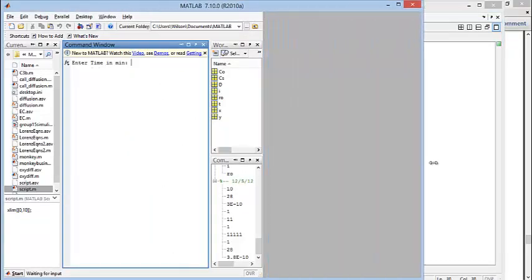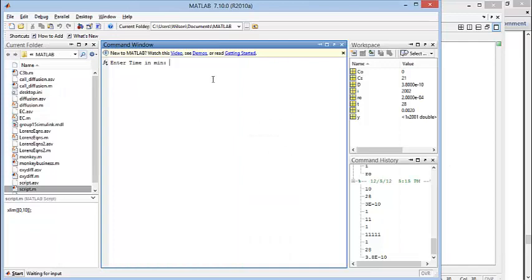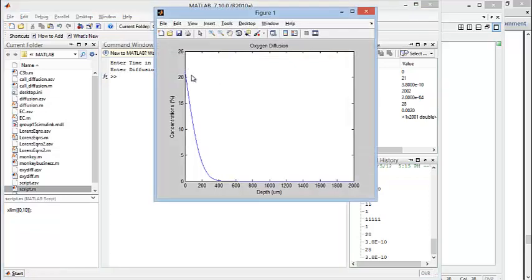MATLAB has prompted us to enter a time. I'm going to enter 28 minutes. It asked for a diffusion coefficient, I'm going to use the value from the Malda paper, which is 3.8 times 10 to the negative 10. We've got a nice curve that drops down to zero oxygen concentration at around 600 micrometers, maybe.